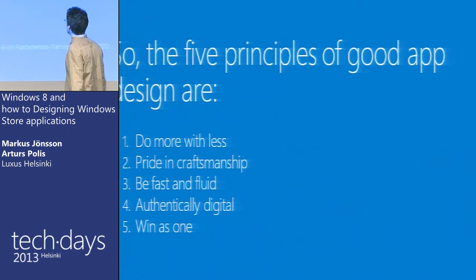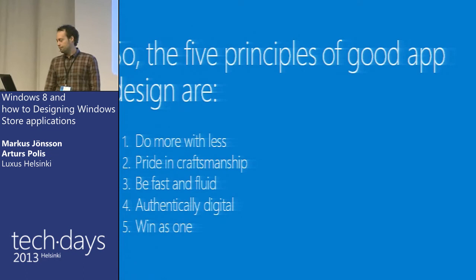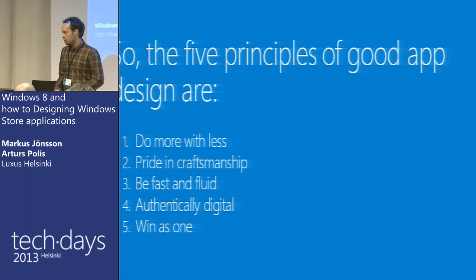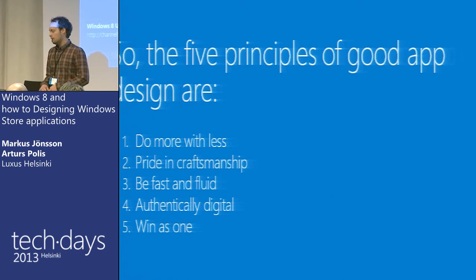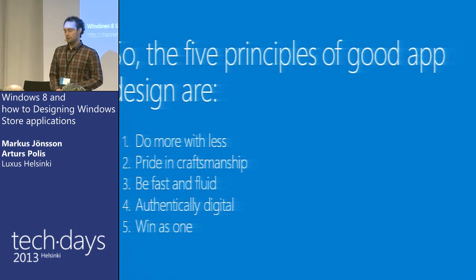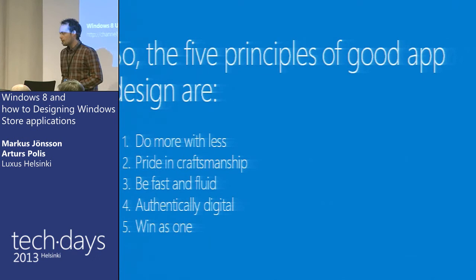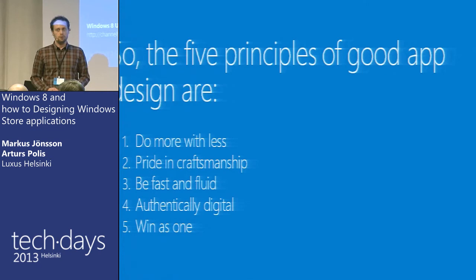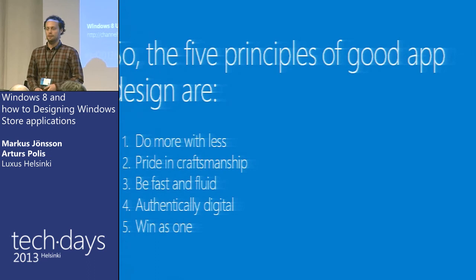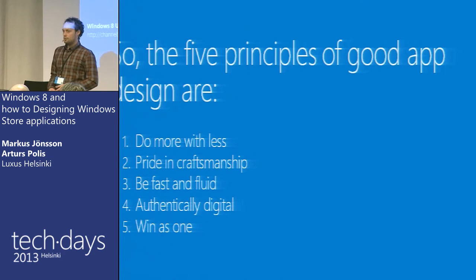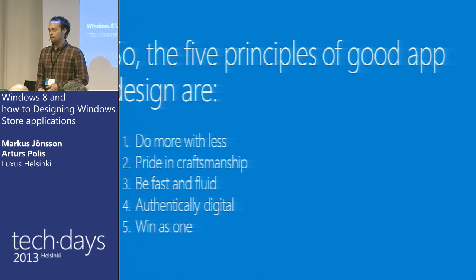So we went through all five principles now, and as a short recap: do more with less — content before Chrome, focus on what's important; pride in craftsmanship — attention to detail, beautiful typography, align things to the grid; be fast and fluid — touch first, subtle animations that help the user interact with the application; authentically digital — break away from physical world metaphors, be digital, use connected environments, connect to the cloud to store states, let users communicate with each other; and win as one — everything together, use what the system has built in, and we're going to help each other to make better applications for the users.